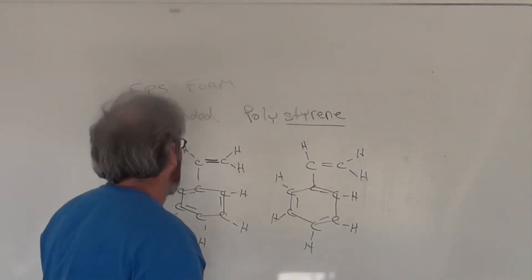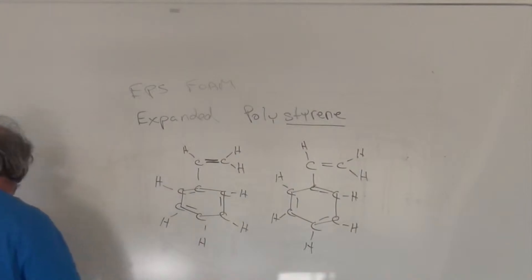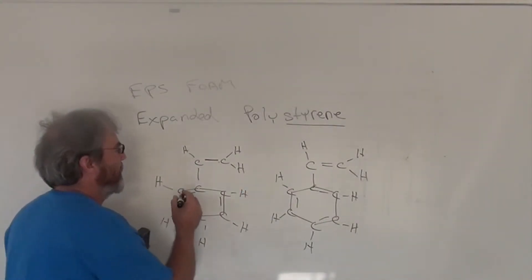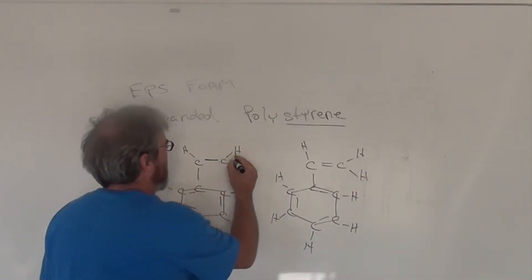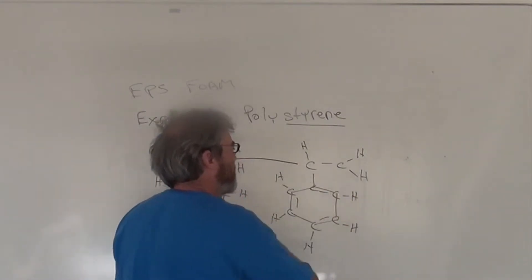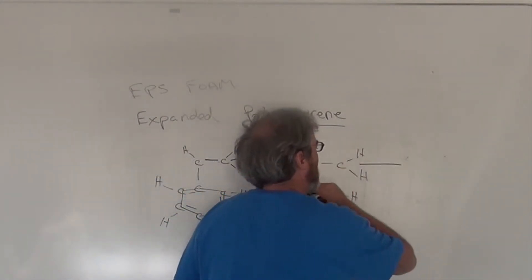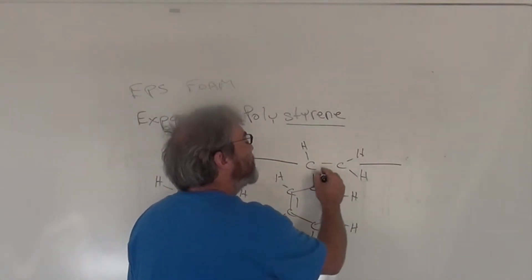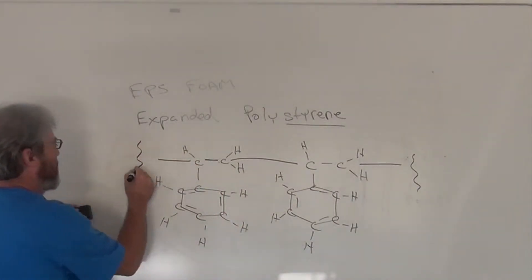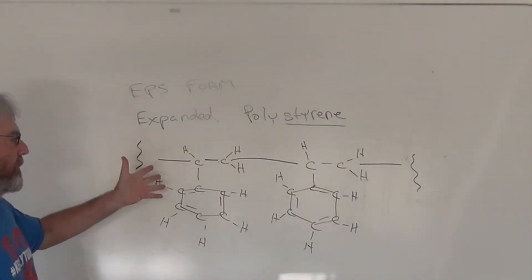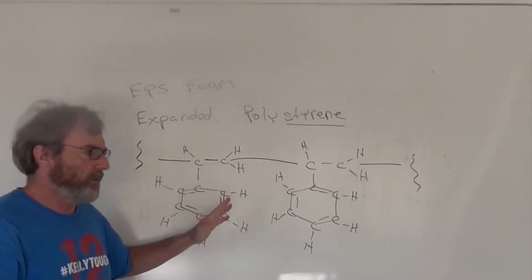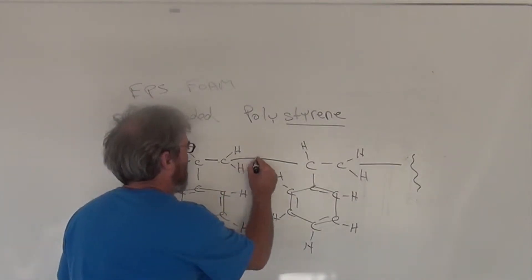So polystyrene basically breaks this double bond and we attach this carbon to this carbon. And we break this and we attach this to another styrene molecule. This comes from another styrene. So basically polystyrene is a long linear array of molecules in which all the styrene monomers have been connected to each other by a single bond.